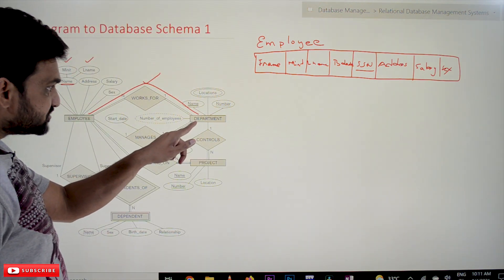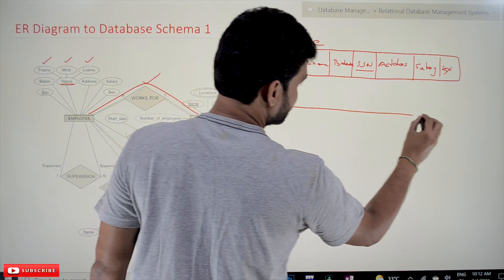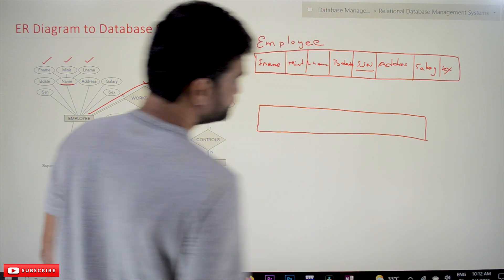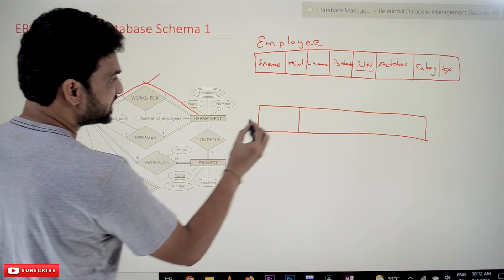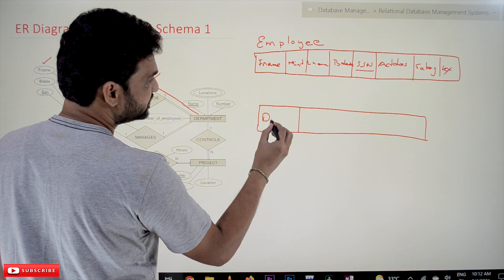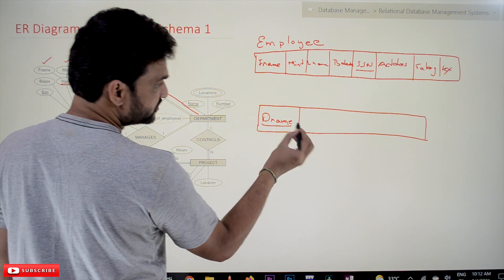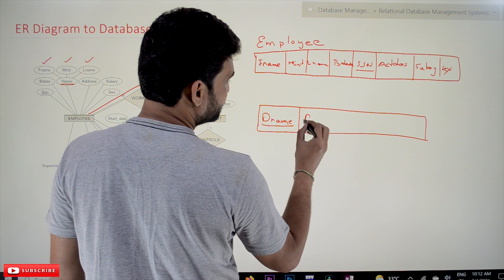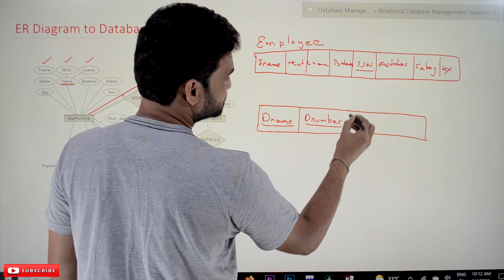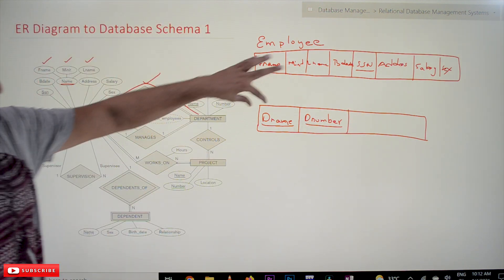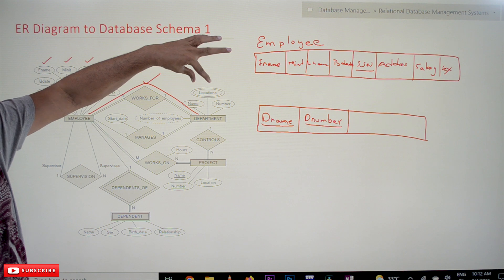The next entity type is Department. An entity type gets converted into a relation in the database schema. The attributes of Department are: D_name — which is a key attribute, so we underline it — and D_number, which is another key attribute and is also underlined. So we have two key attributes here.